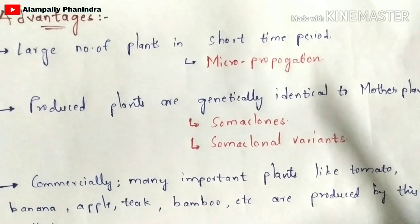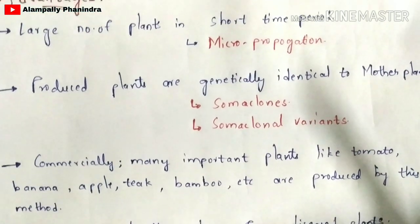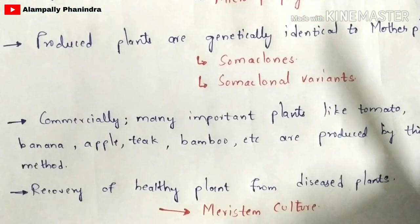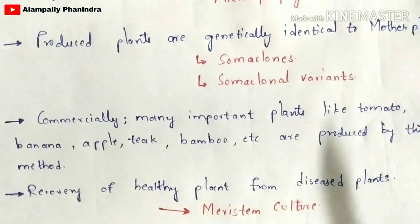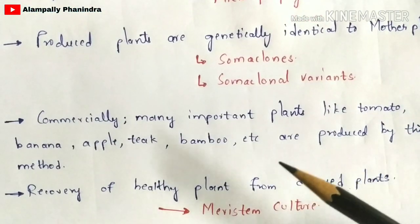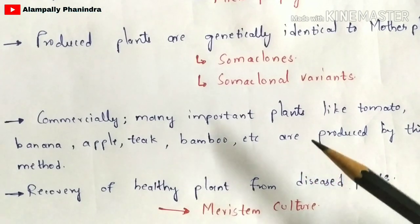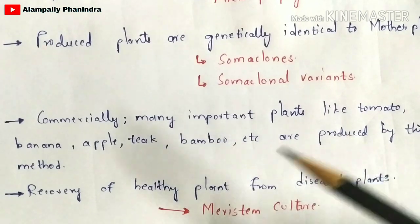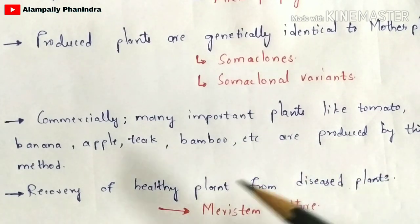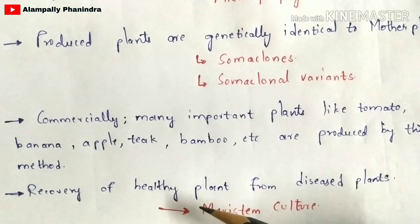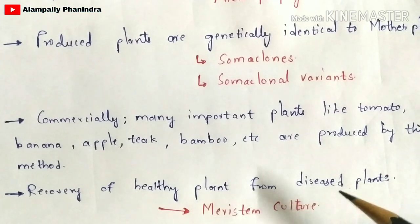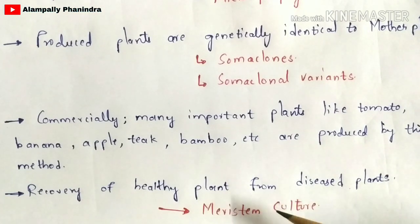The third advantage is that many important commercial plants like tomato, banana, apple, teak, and bamboo are produced by this method. Another advantage is the recovery of healthy plants from diseased plants, which is called meristem culture.